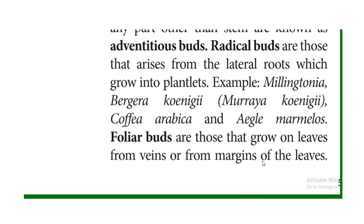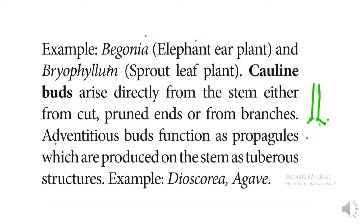Foliar buds are those buds that grow on leaves — on the veins or the margins of leaves. Those buds are foliar buds. Examples are Begonia and Bryophyllum, where buds form on the leaves of the plant.